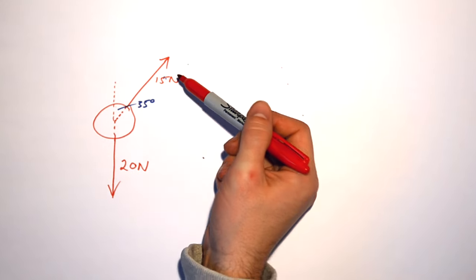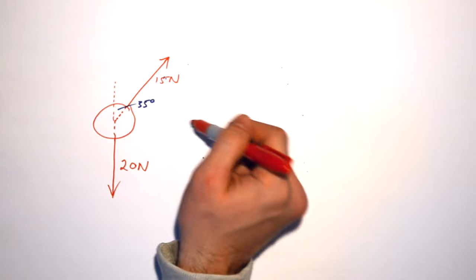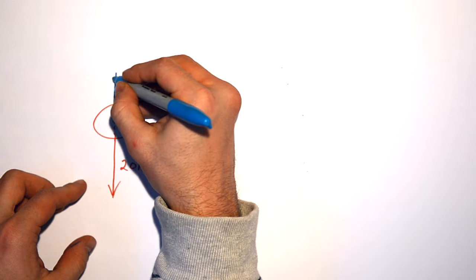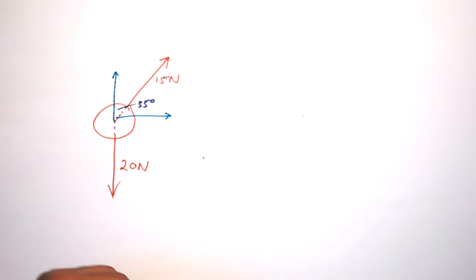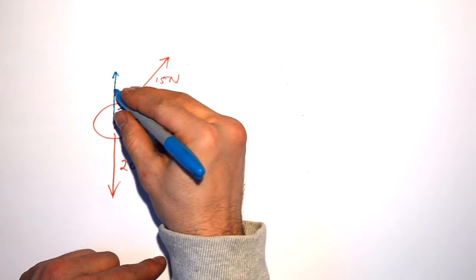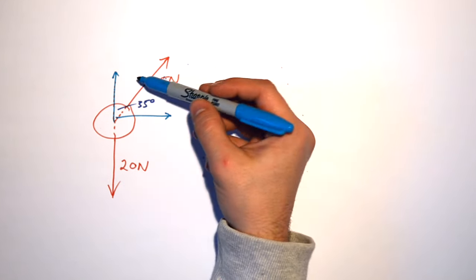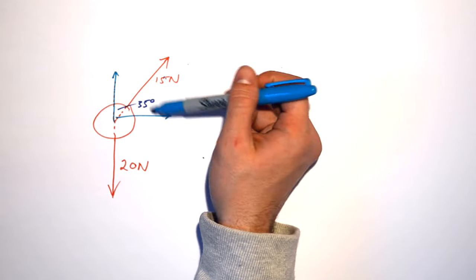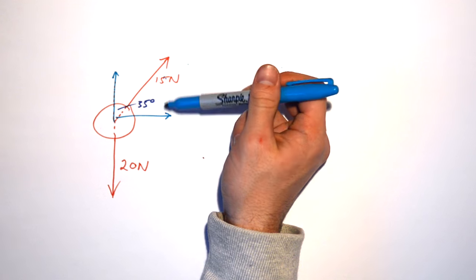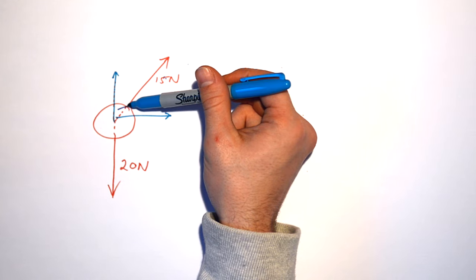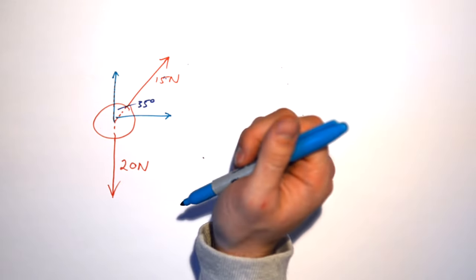I have to resolve this 15 Newtons into vertical and horizontal components. We could draw a right-angle triangle and use SOHCAHTOA, but we're going to use my quick and easy vectors trick instead. Let's find the vertical component of this 15 Newtons first. We know both components are going to be smaller than 15 Newtons because we're going from a resultant to a component, so we'll be multiplying by cos or sine of 35. Don't forget to watch my easy vectors trick video if you're unsure.